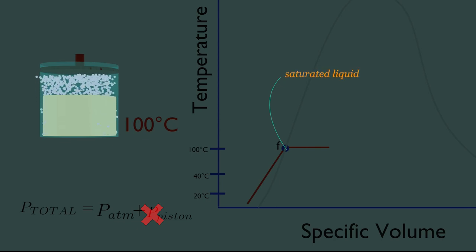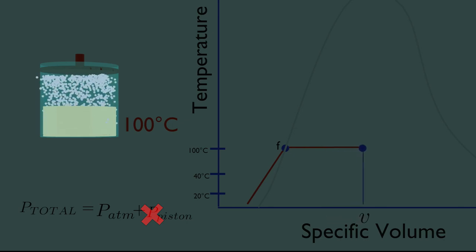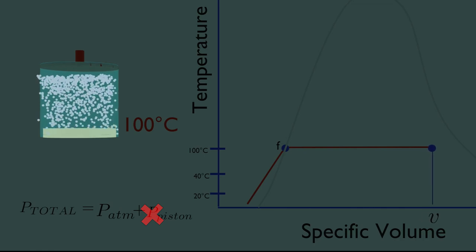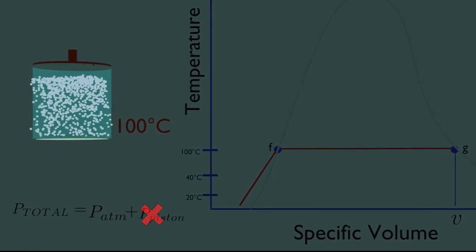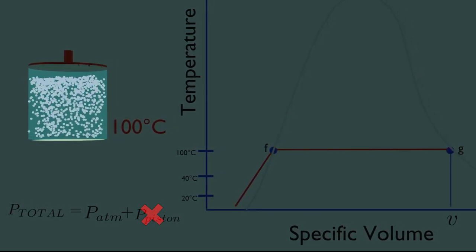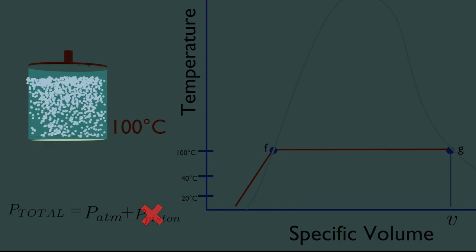Once boiling starts, the temperature stops rising until the liquid is completely vaporized. During a boiling process, the only change we will observe is a large increase in the volume and a steady decline in the liquid level as a result of more liquid turning to vapor. The vaporization process continues until the last drop of liquid is vaporized. At this point G, the entire cylinder is filled with vapor.